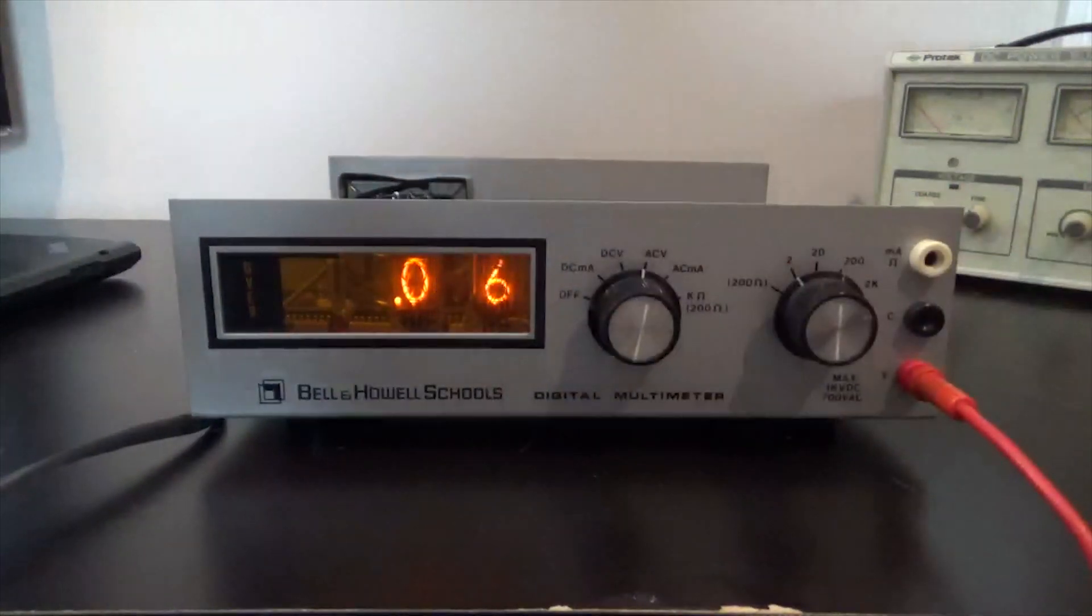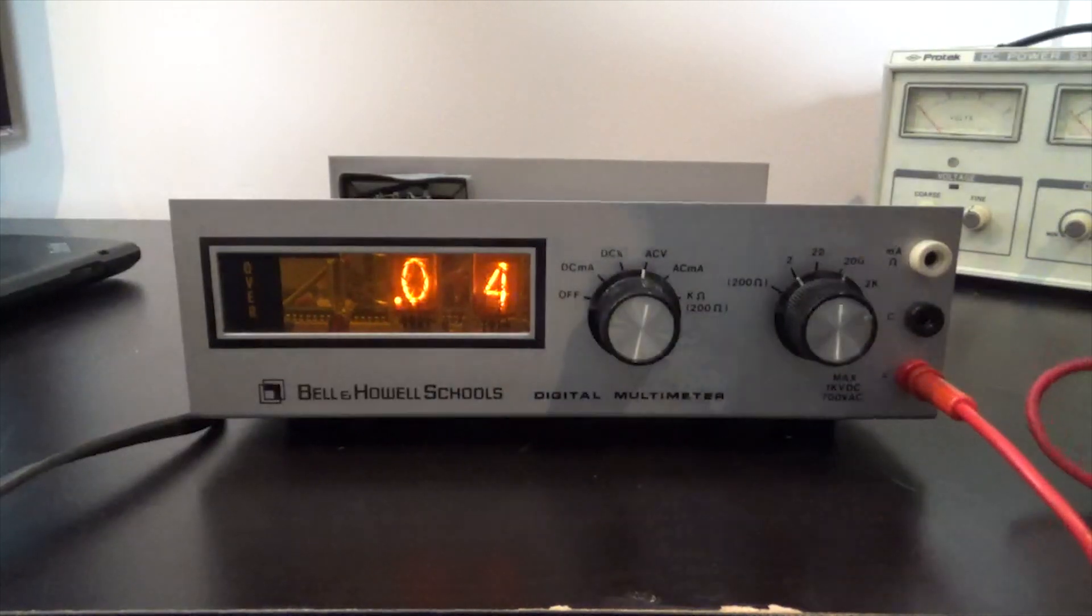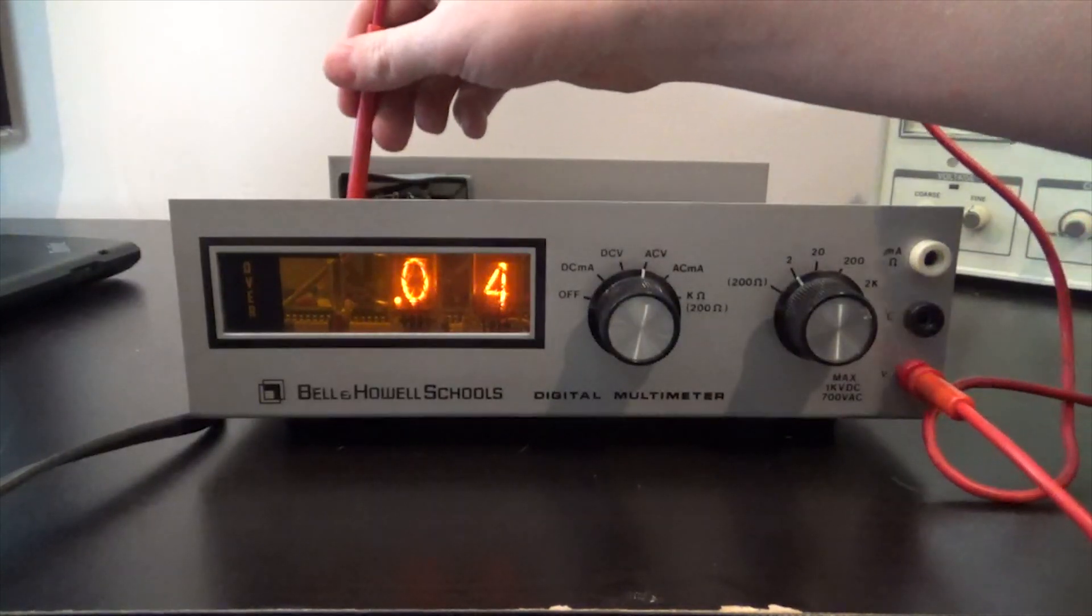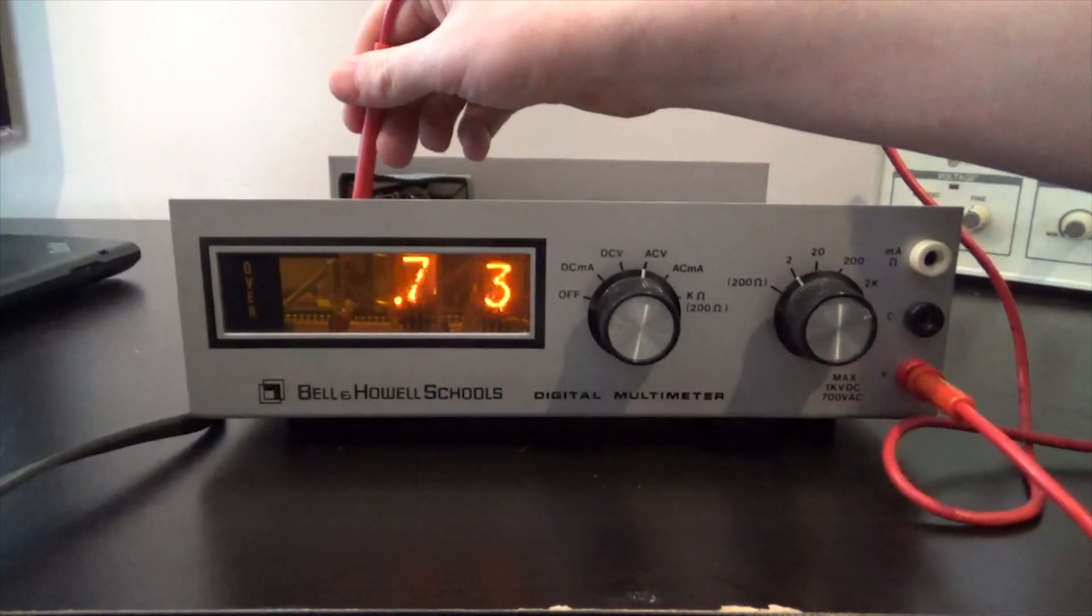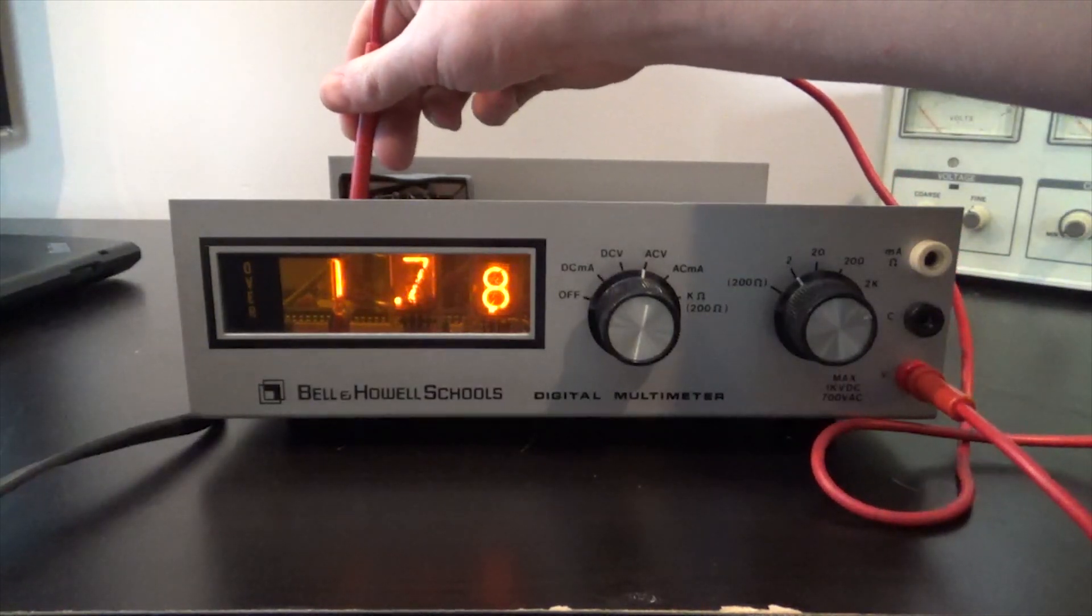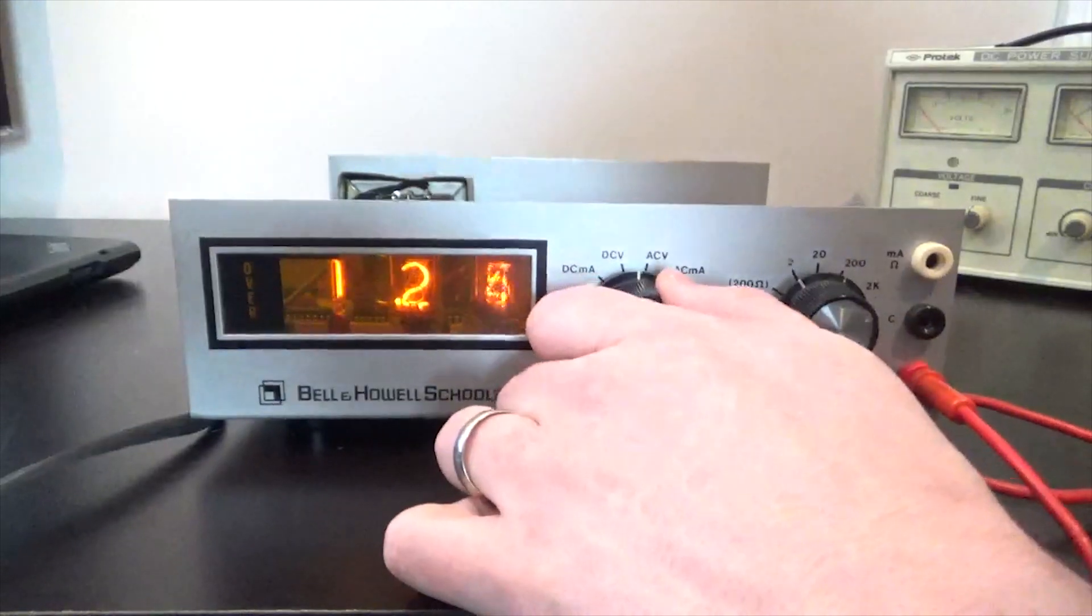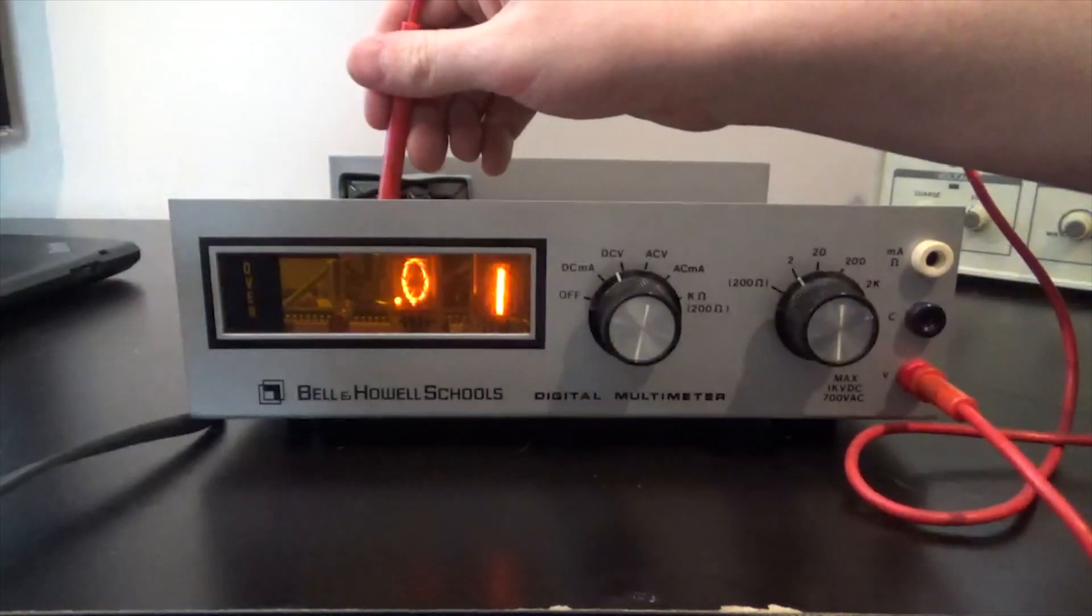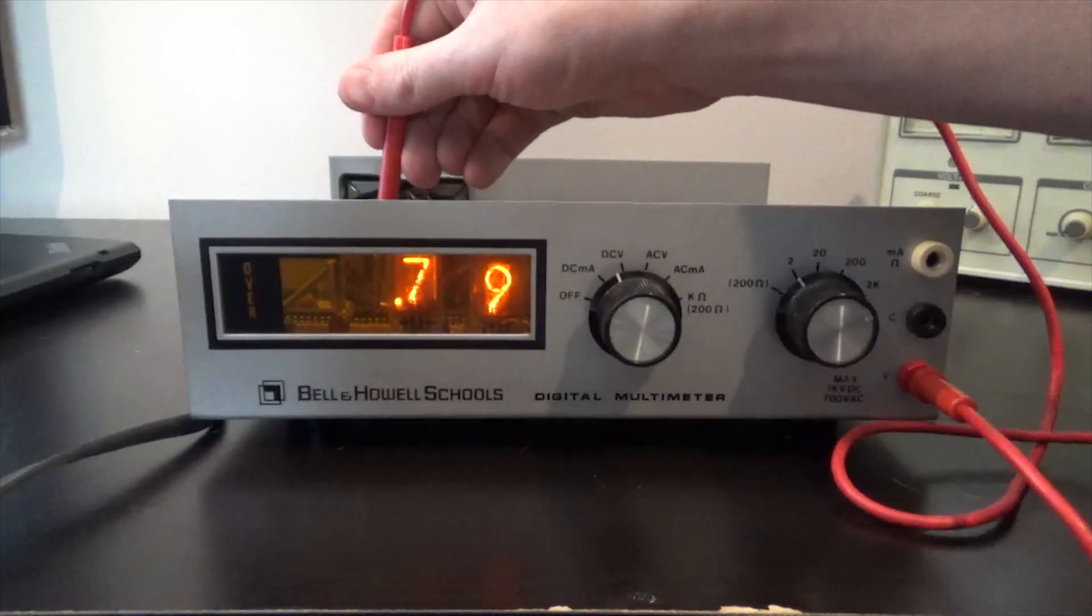However, if we look at the AC test point, now this is also 1.79. 1.79. The one illuminates. But if we go back to DC, it doesn't.